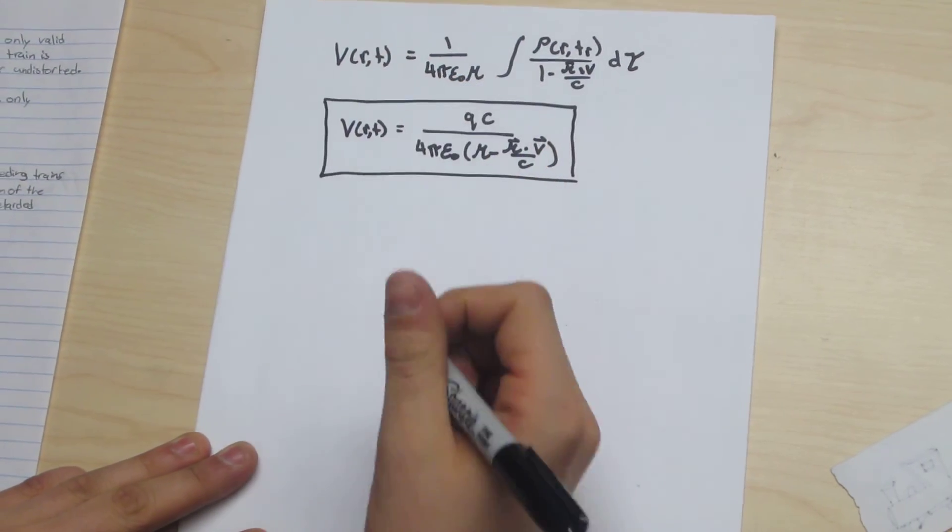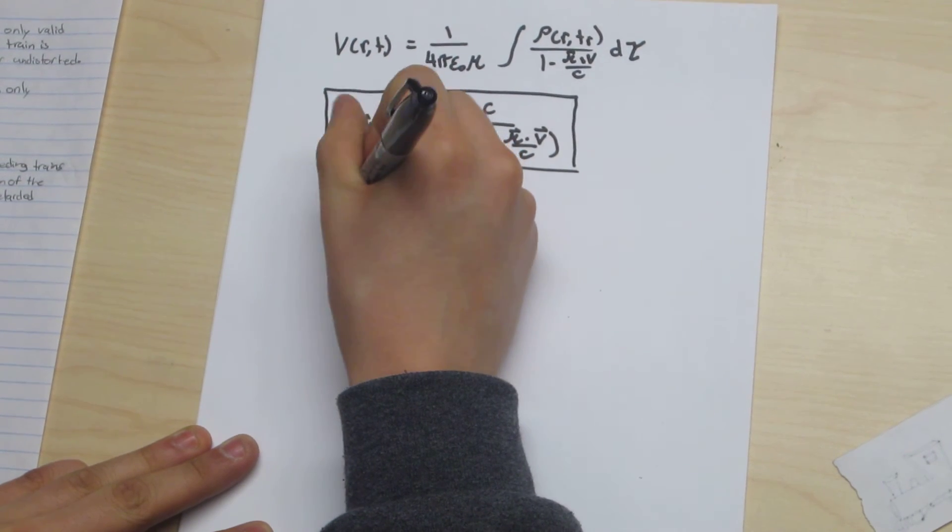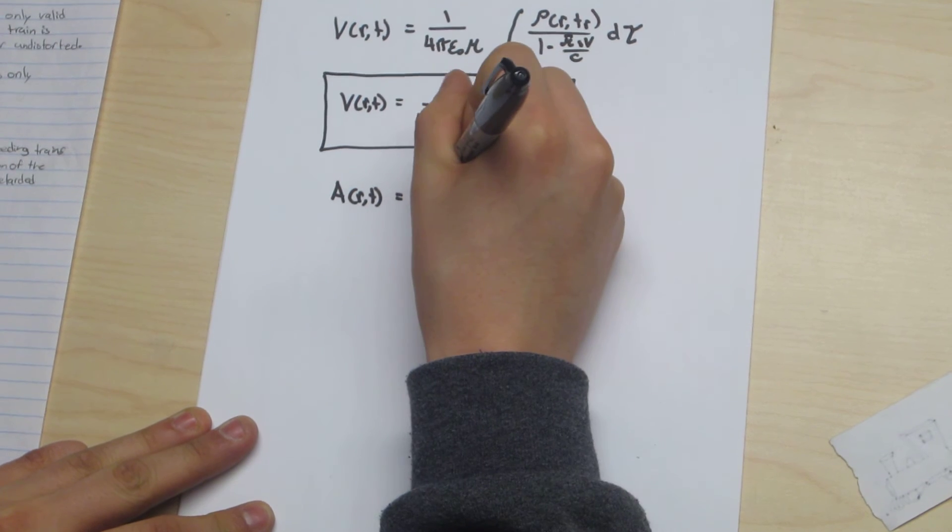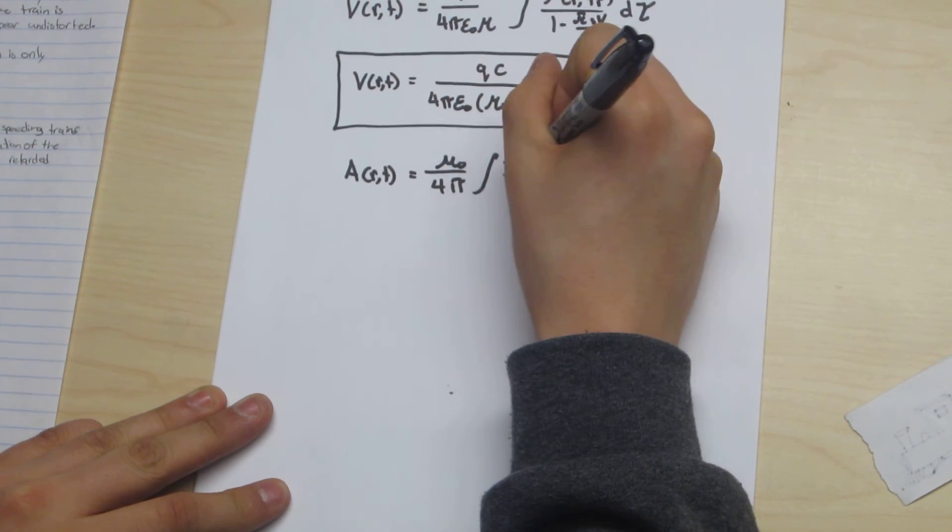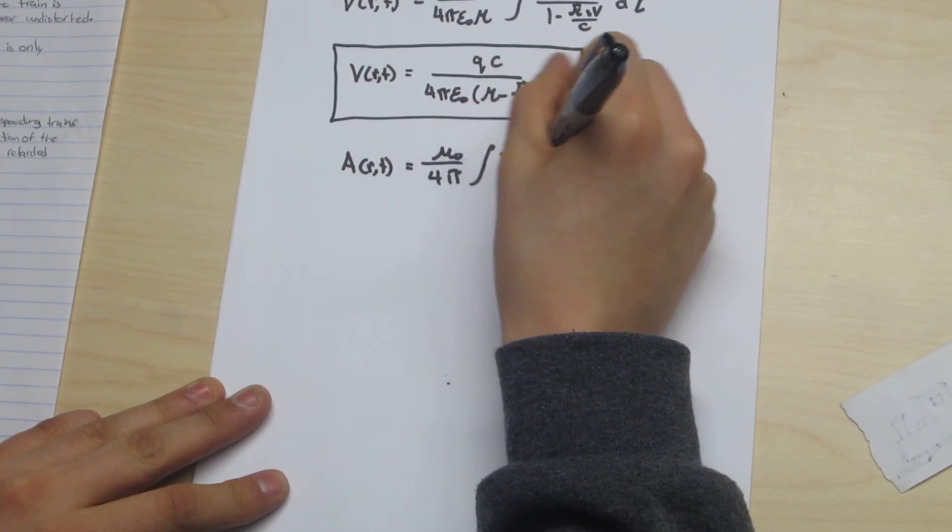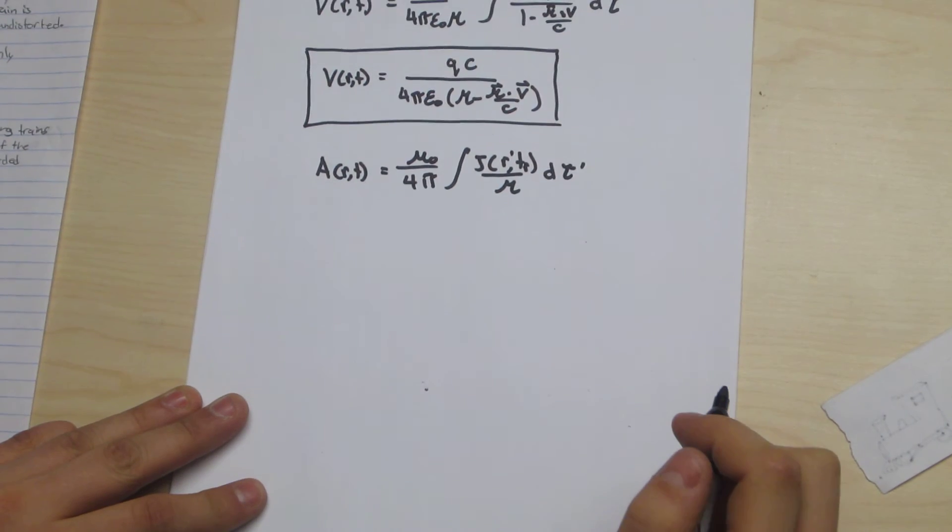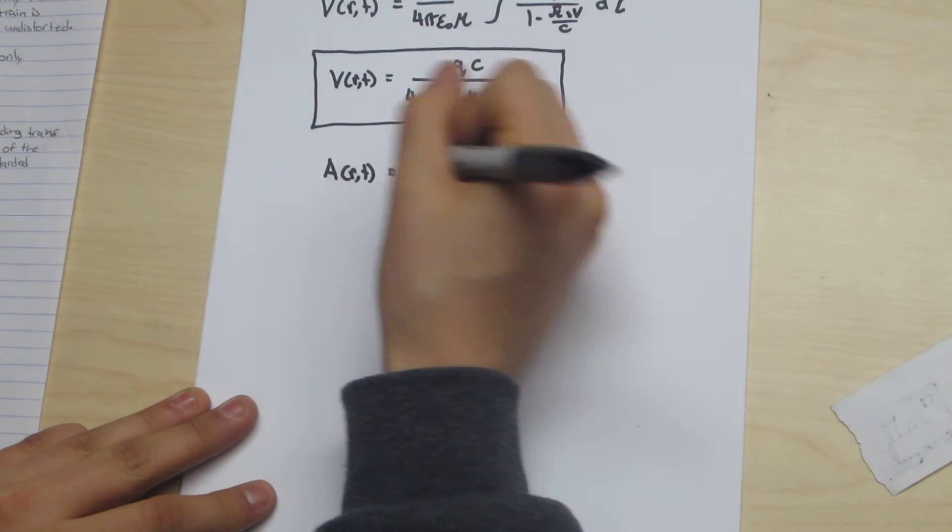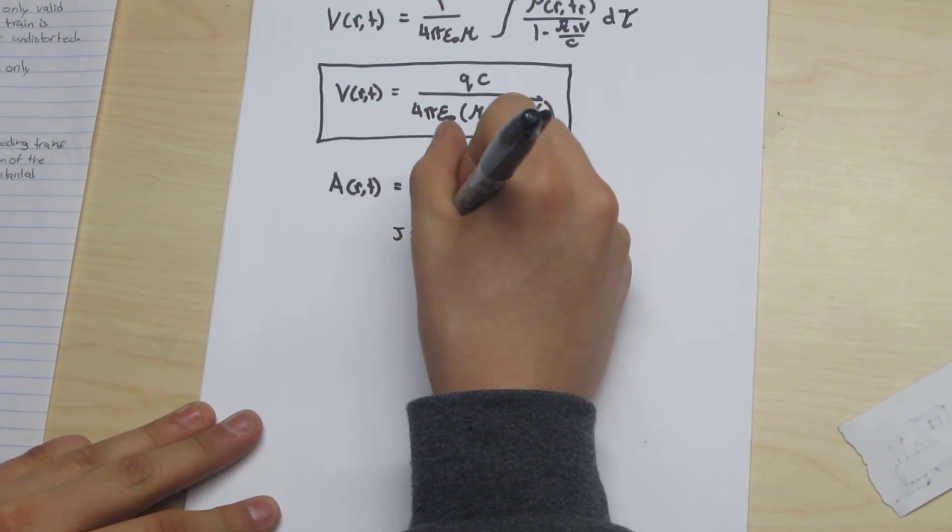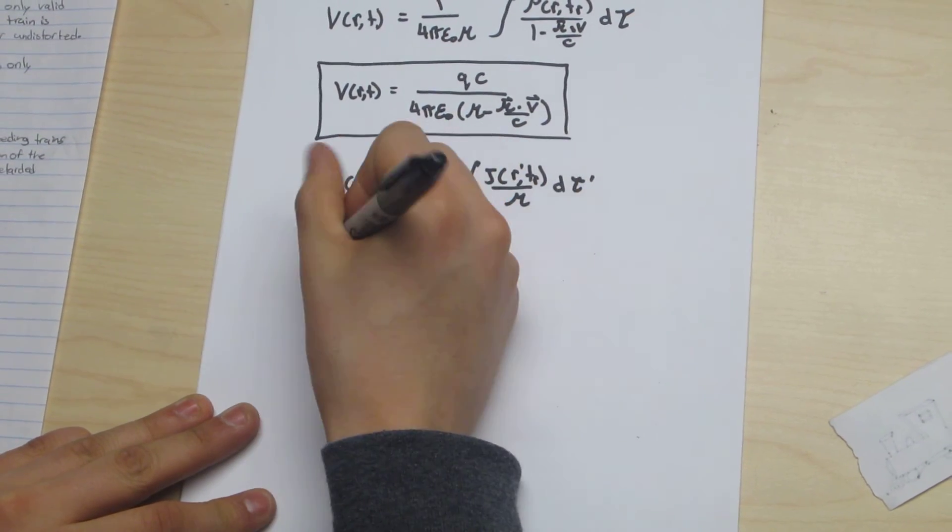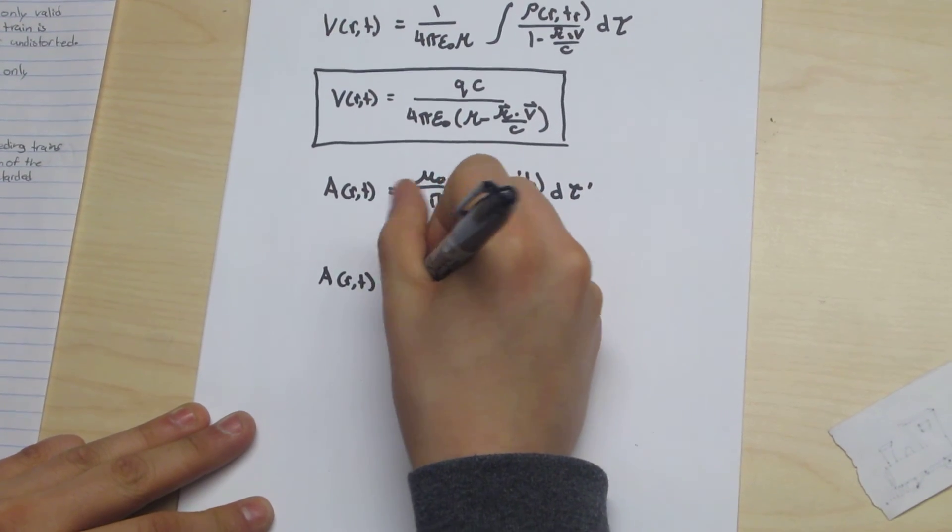Now solving for the vector potential a of r and t using the expression we derived earlier. And because the current density of a rigid body j is equal to rho times v, this expression simply becomes mu0 over 4 pi.